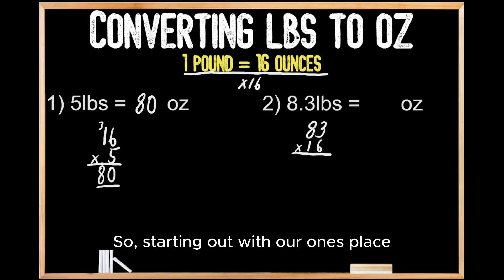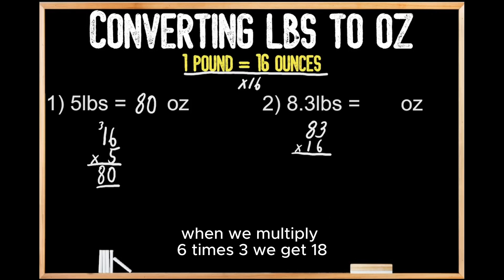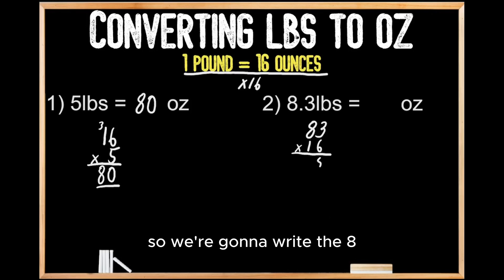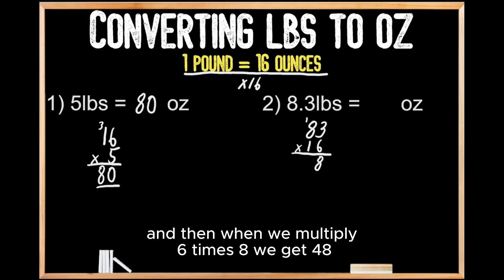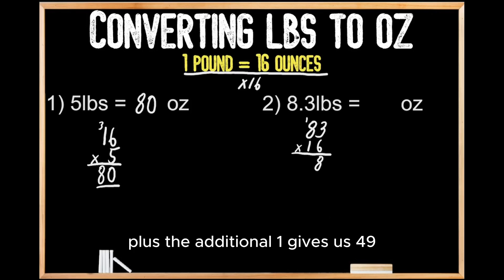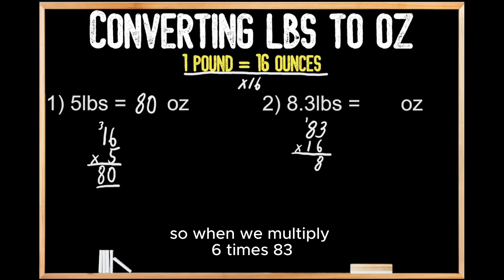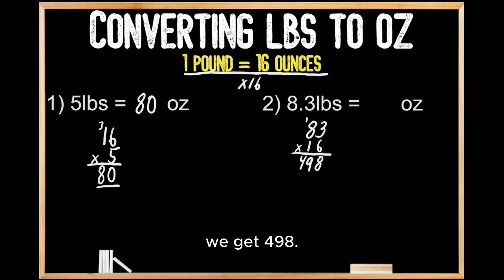Starting out with our ones place, when we multiply six times three, we get 18. So we're going to write the eight and carry the one. Then when we multiply six times eight, we get 48, plus the additional one gives us 49. So when we multiply six times 83, we get 498.